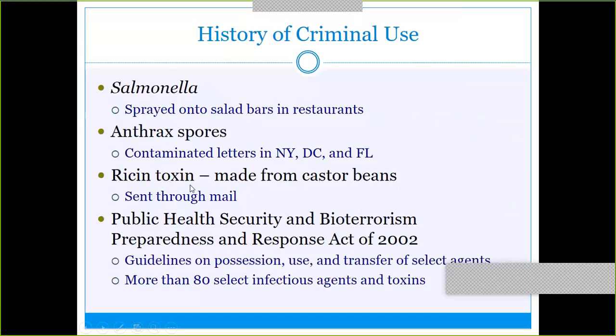There is some history of criminal use. The first case of salmonella bioterrorism was when it was purposely sprayed onto salad bars in restaurants, causing salmonella food poisoning. Anthrax is a big bioterrorism agent because Bacillus anthracis produces spores that can be put into contaminated letters — you open a letter and breathe in the spores. Ricin toxin, made from castor beans, has also been sent through the mail.